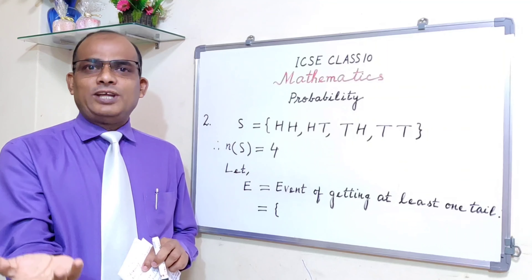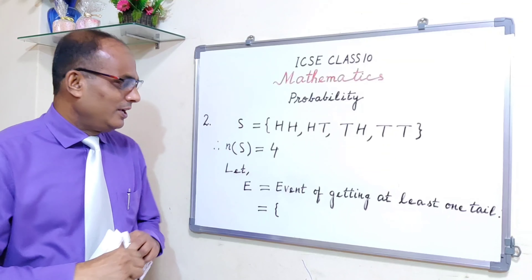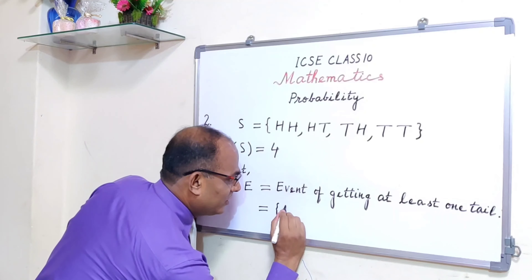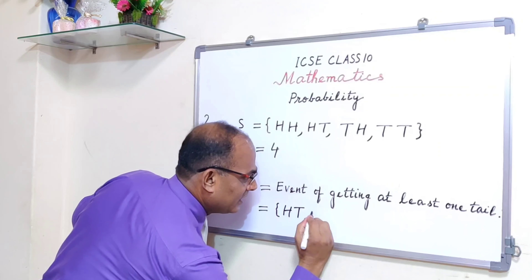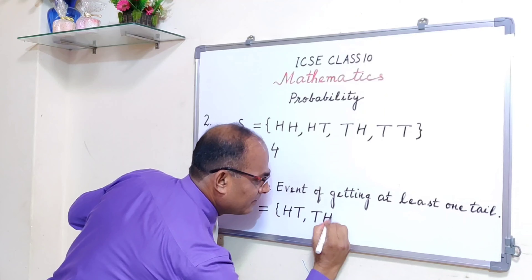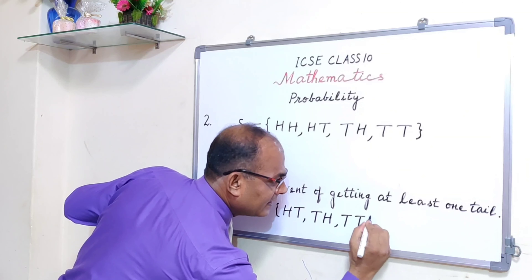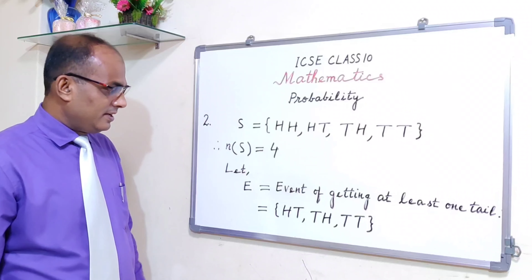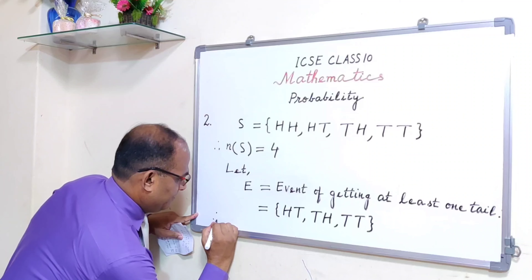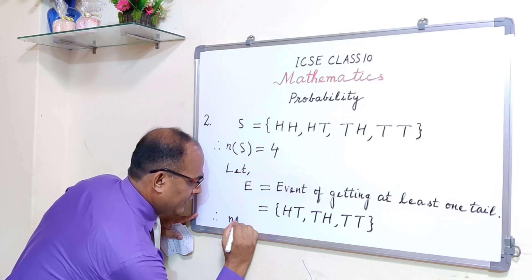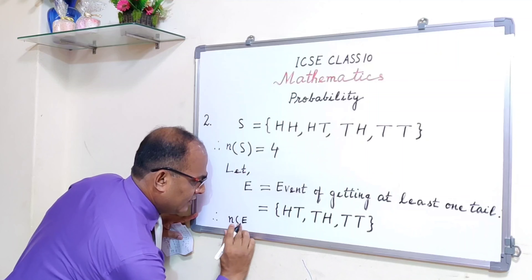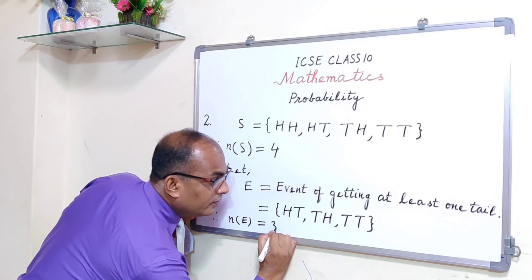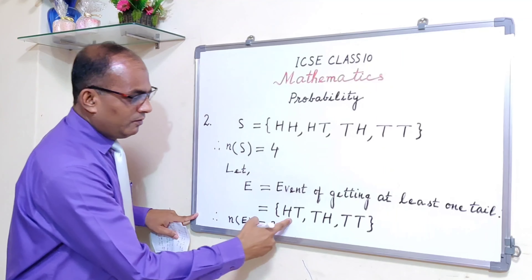So at least one tail includes: HT, TH, and TT. These outcomes all have a minimum of one tail. Therefore n(E) = 3.